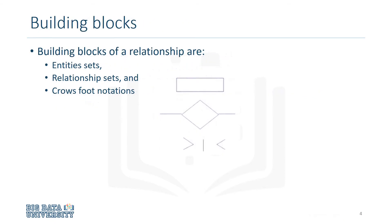The building blocks of a relationship are entities, relationship sets, and crow's foot notations. Entity sets are represented by a rectangle. Relationship sets are represented by a diamond, with lines connecting associated entities.